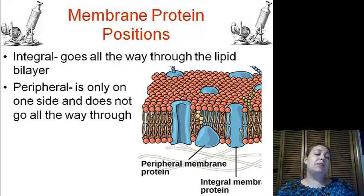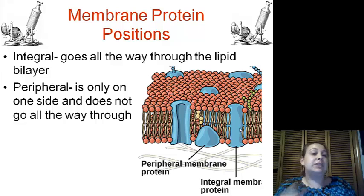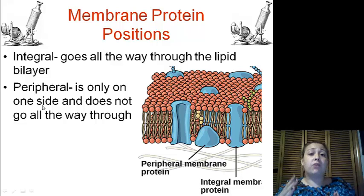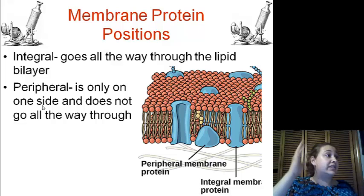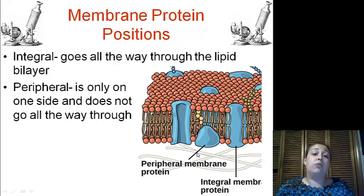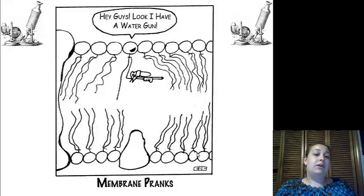Now, when talking about proteins, we have two positions they can be in. They can be integral proteins, which means they go all the way through the membrane and you can see them on both ends. Now for a peripheral protein, that's just going to be on the side — just like your peripheral vision is the side vision. A peripheral protein only is on one side of the membrane and does not go all the way through. That's all for today. See you later.